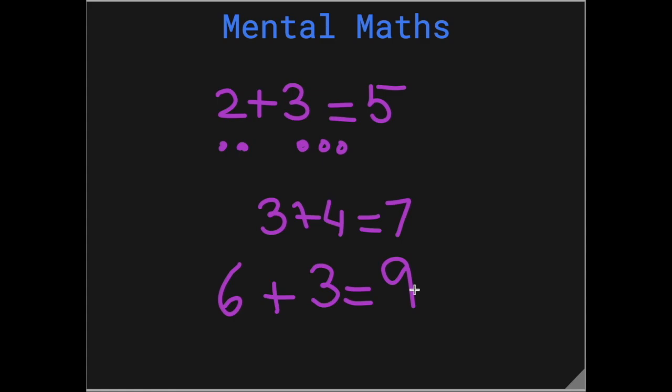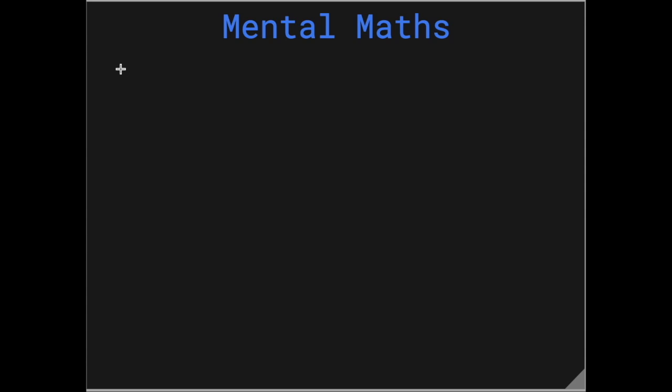And the next step is that you need to learn how the number 10 is made. Which combination of two numbers make the number 10. For example, 5 plus 5 is 10. 6 plus 4 is 10. 7 plus 3 is 10. 1 plus 9 is 10. So just learn these make 10 numbers.